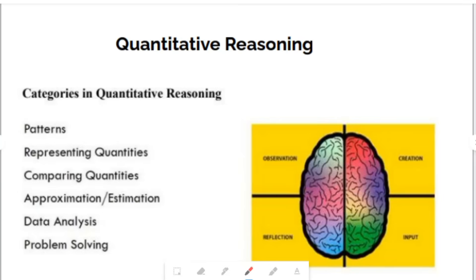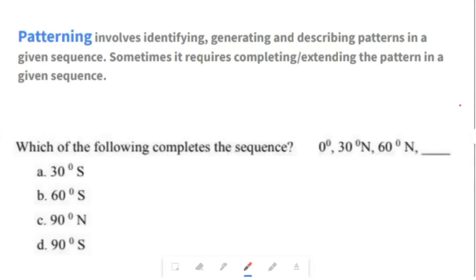The quantitative reasoning section of the ability test paper comes into different categories. For this section, you have patterns, representing quantities, comparing quantities, approximation or estimation, data analysis, and problem solving. These can also correlate. So, one question can have patterns and data analysis. It may have data analysis and problem solving. Patterning involves identifying, generating, and describing patterns in a given sequence. Sometimes, it requires completing or extending the pattern in a given sequence.